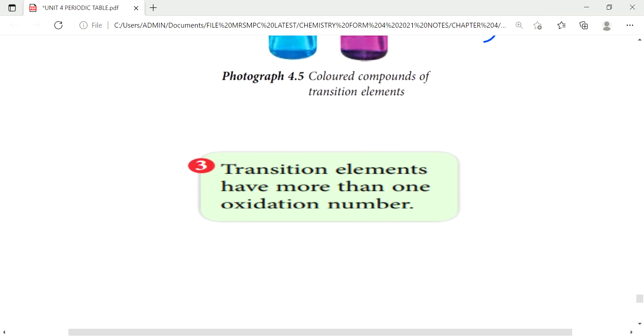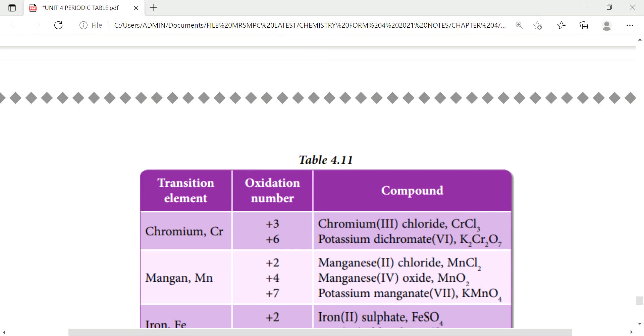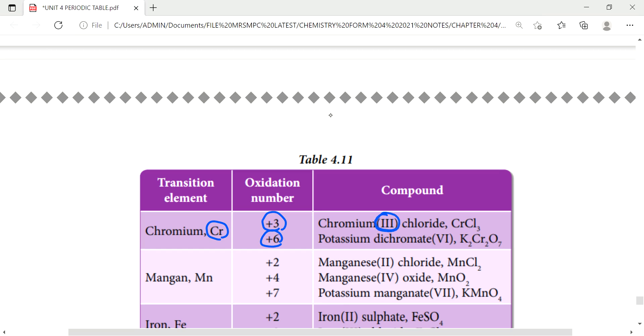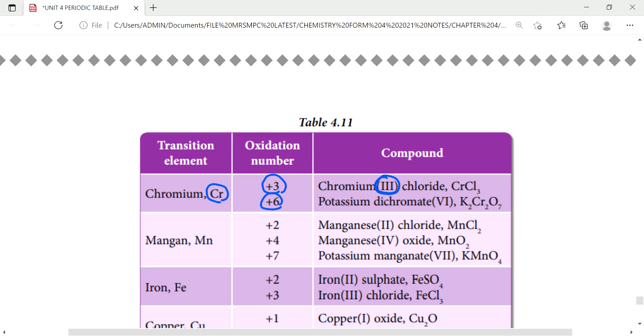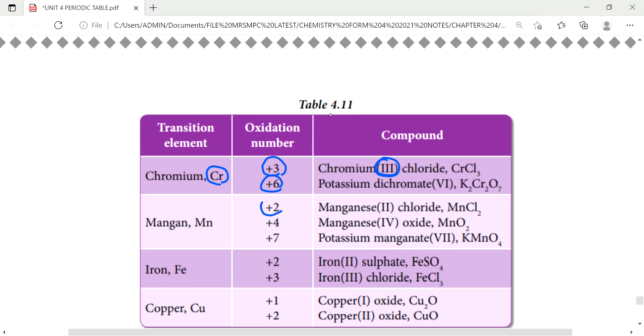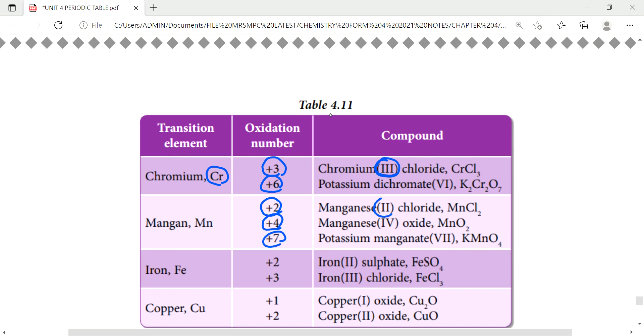Next is transitions element have more than one oxidation number. We look here at chromium. It has more than one charge, positive 3 and positive 6. Chromium III, the roman 3 shows its charge is plus 3. Next manganese has plus 2, plus 4, plus 7. Look at the roman numerals.